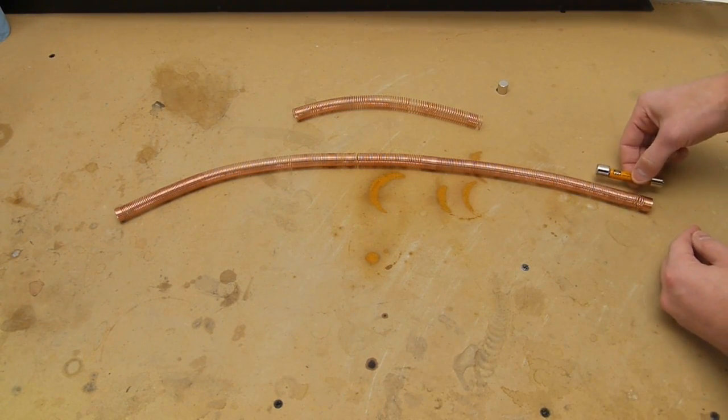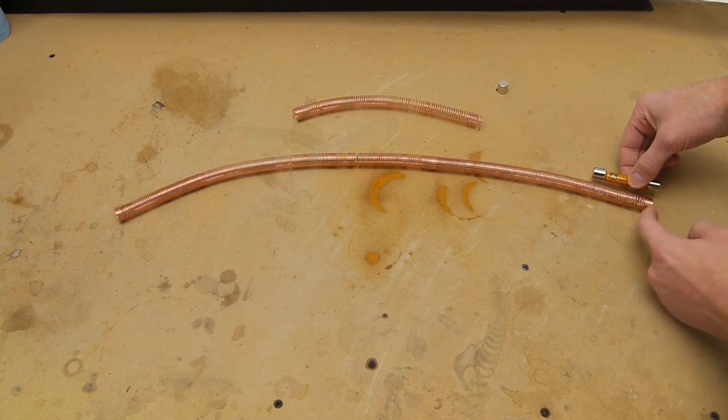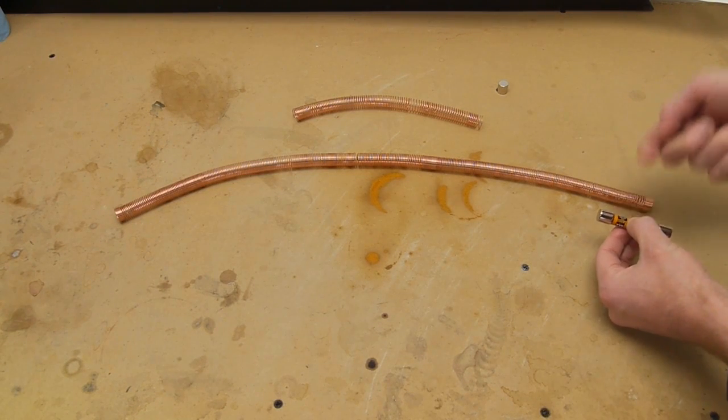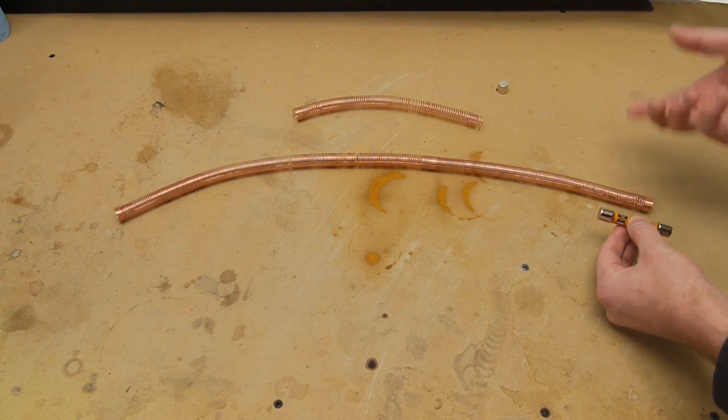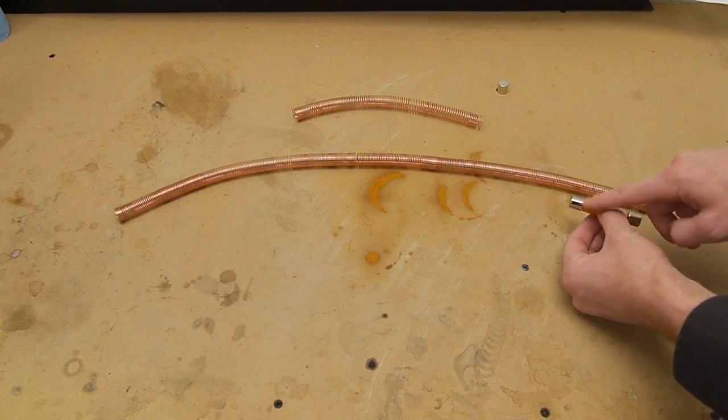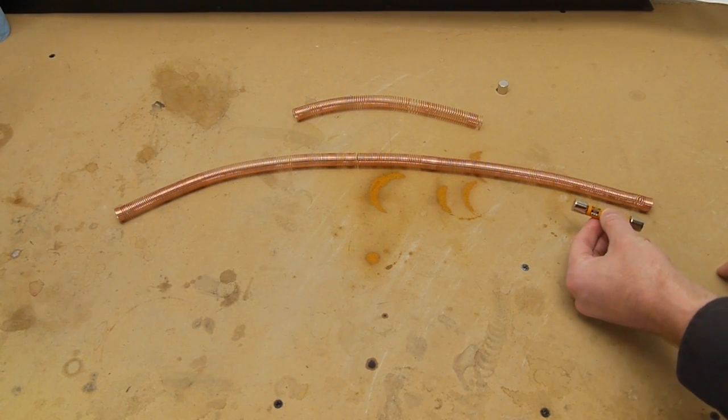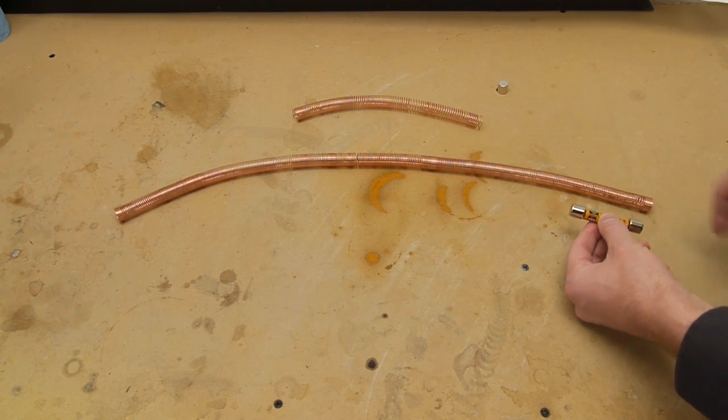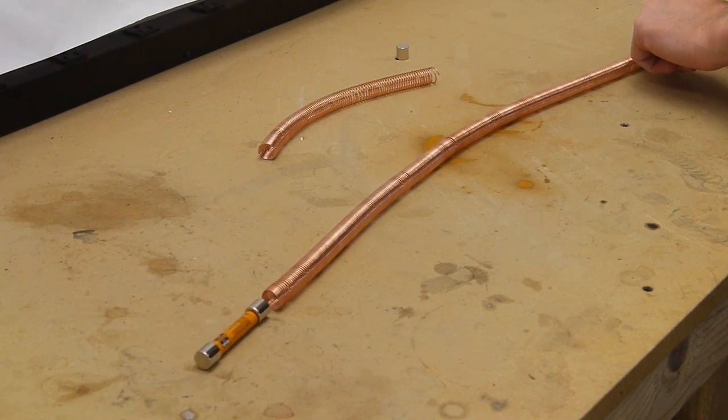So when this thing is inside the copper coil, it's actually conducting current from one end to the other, and the current flowing through the copper coil creates a magnetic field, but then these magnets here oppose that field. They push against that field that's being created by the electricity, and that's what propels the thing forward.